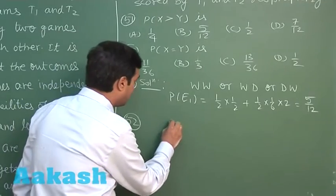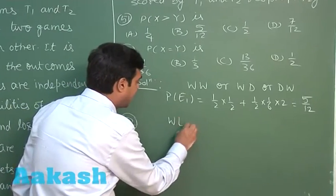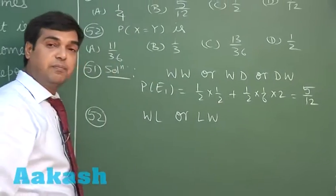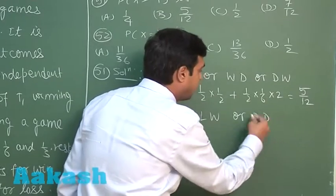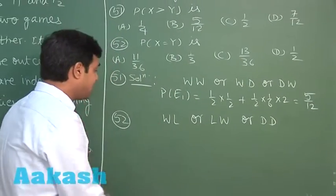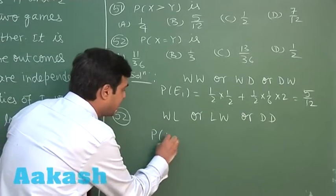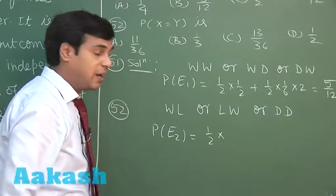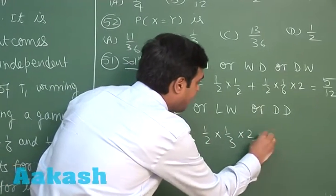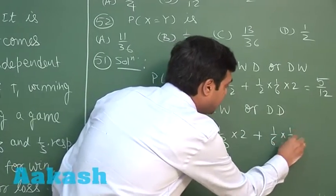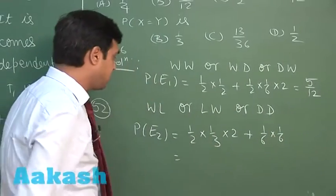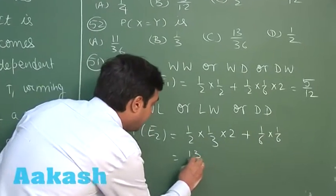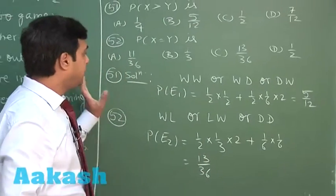Question number 52: X equals Y means T1 wins then loses, or loses then wins, or both games are drawn. So the required probability of event E2 is equal to (1/2)(1/3) multiplied by 2, plus (1/6)(1/6), which gives 1/3 plus 1/36, that is 13/36.